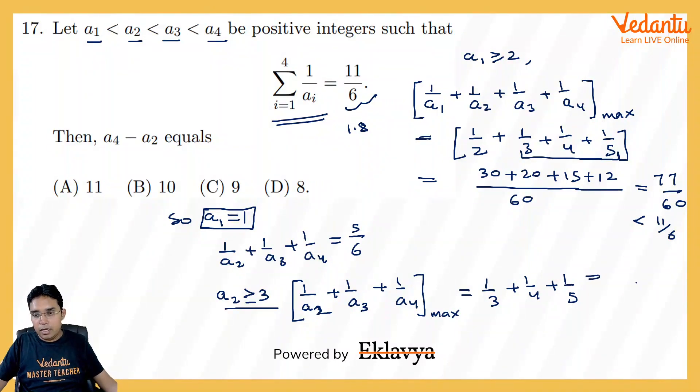I think this 30 will not come here, so this will be 47 upon 60, and you can check 5 by 6 is 0.8, greater than 0.8 actually, and this is less than 0.8. So here this is less than 5 by 6, so once again this a2 cannot be greater than or equal to 3, so this a2 has to be equal to 2 only.